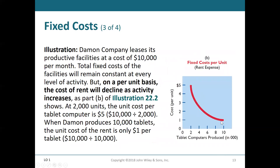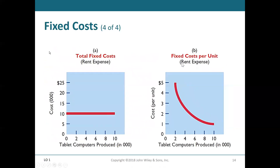The fixed cost per unit is a curve, though, because the more units we have, the more we can divide that rent out into smaller amounts per unit. So the dollar amount per tablet computer for rent expense goes dramatically down the more units we produce. We had $5 per unit if we produced 2,000 units, but only $1 per unit if we produced 10,000 units. Total costs stay the same, but the cost per unit goes down the more units we produce.